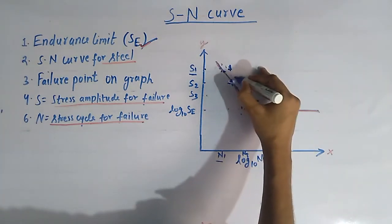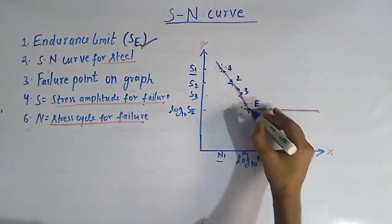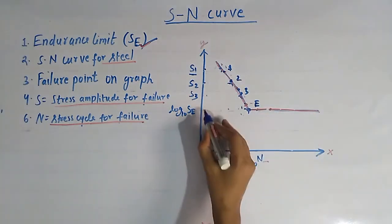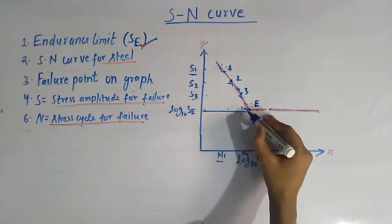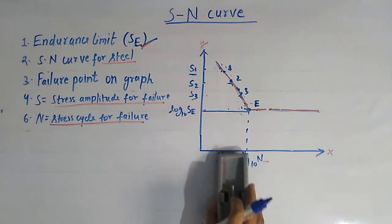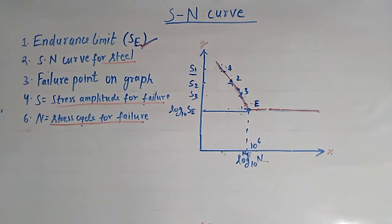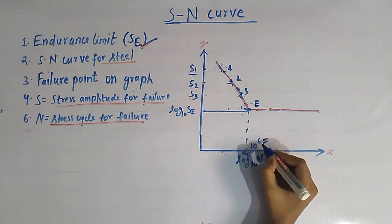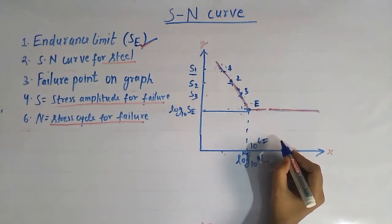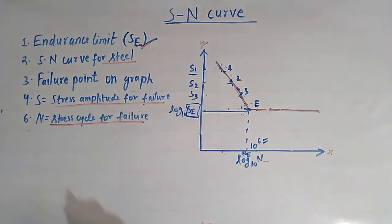Points 1, 2, and 3 lead us to point E, at which the value of stress amplitude is SE and the number of cycles is 10 raised to the power 6. This point is called the endurance limit because 10^6 cycles are considered sufficient for the component to survive for a longer period of time. We take SE as the endurance limit because the material is not failing at that considerable number of cycles.